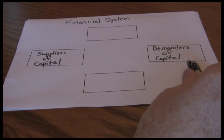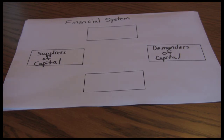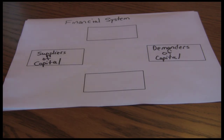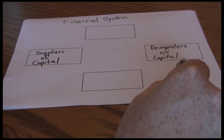On the other side we have demanders of capital — people that have a need for additional money this time period. Again, it could be individuals, like somebody buying a new car, or businesses wanting to open a new warehouse, production facility, or restaurant. The US federal government quite often acts as a demander of capital, issuing treasury bills and treasury bonds because tax revenues are less than government spending. The purpose of the financial system is to move capital from suppliers to demanders of capital as efficiently as possible.